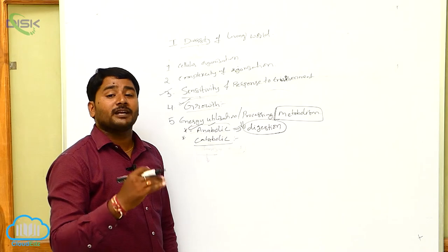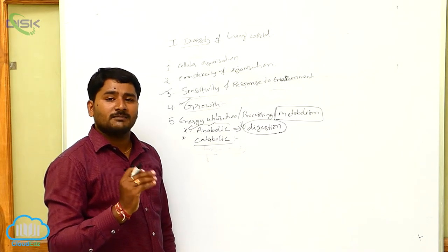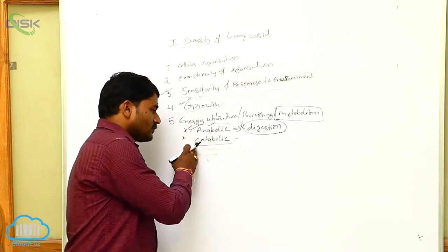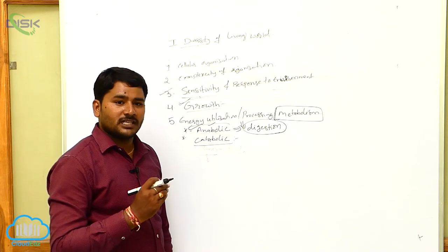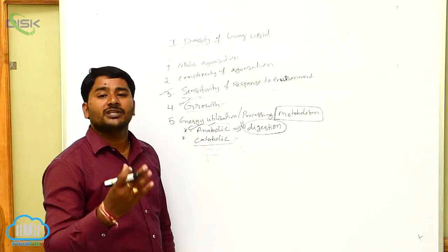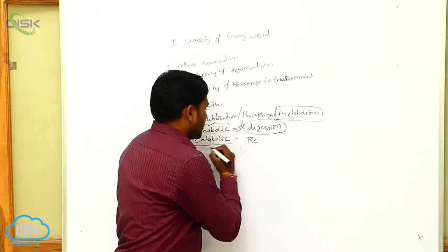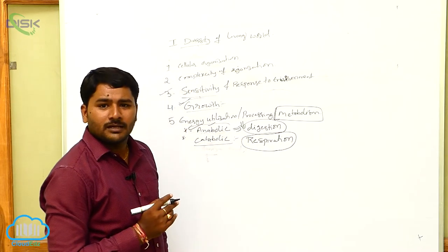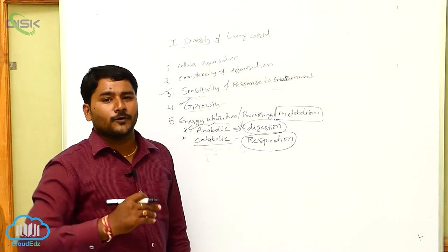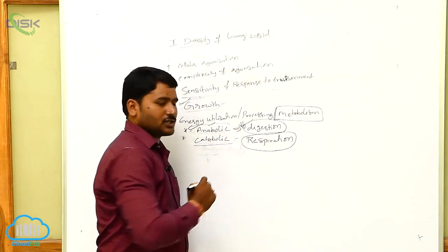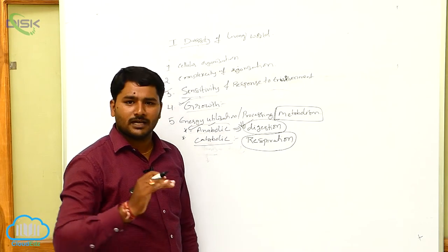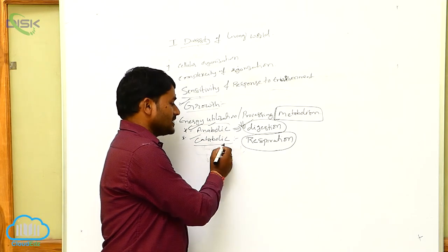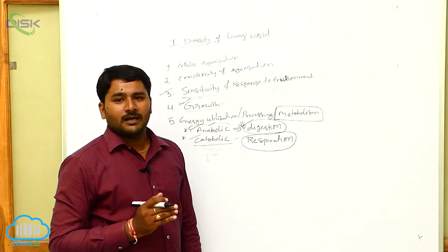Catabolic reactions involve the expenditure of energy — energy is utilized or spent. The best example of a catabolic reaction is respiration. In respiration, already stored food materials from digestion undergo oxidation, and energy is produced and utilized. So catabolic process means energy is utilized or energy is spent.